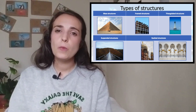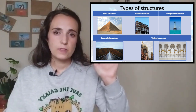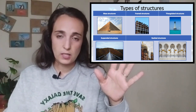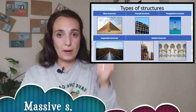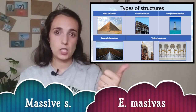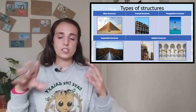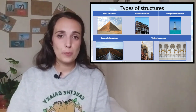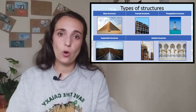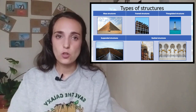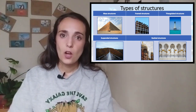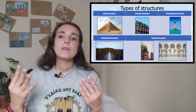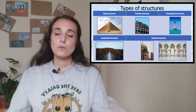There are five main types of structures. The first are massive structures, or mass structures, which are absolutely thick inside — like pyramids, buildings, castles, and towers. All of these structures are thick inside.